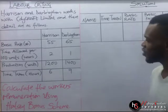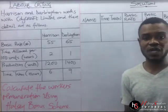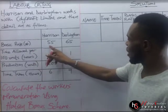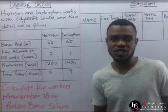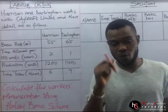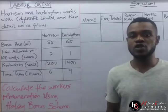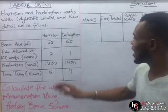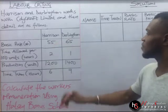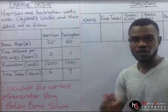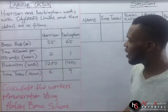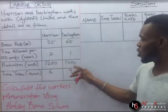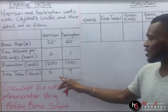Now, this table came in a different form from the introductory video. We have basic rates: 55 for Harrison and 65 for Darlington — the rates are different. We have time allowed per 100 units in hours: 2 and 1 respectively. Production units are 1,200 and 1,400. Time taken in hours: 6 and 9.